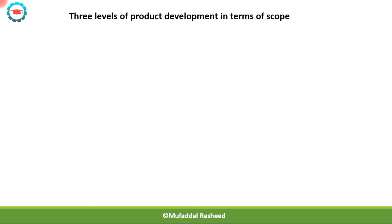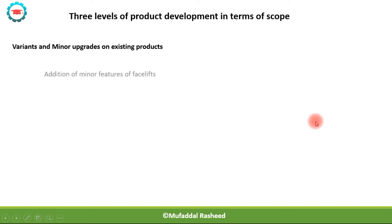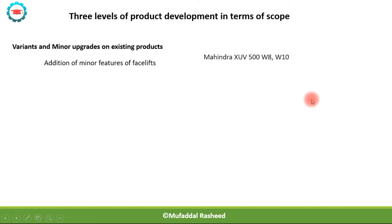These lesser versions have a scope limited to improving existing product lines. One version is the development of variants and minor upgrades on existing products. So if you have an existing vehicle and there are some features to be added and the vehicle has to undergo a minor facelift, then that product development effort will be categorized as a minor upgrade.